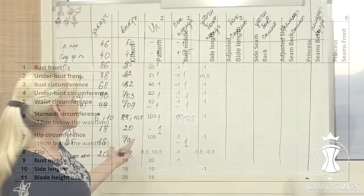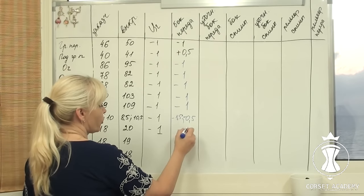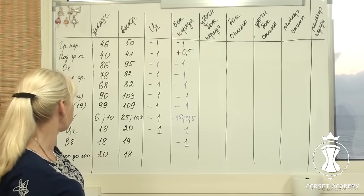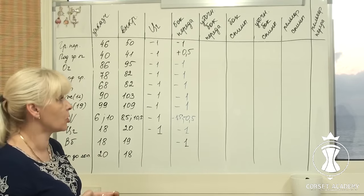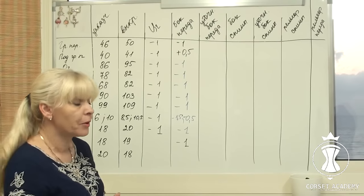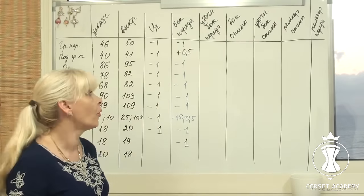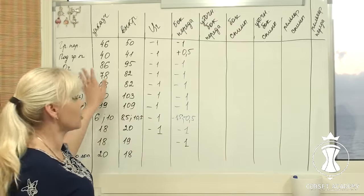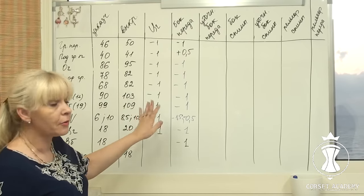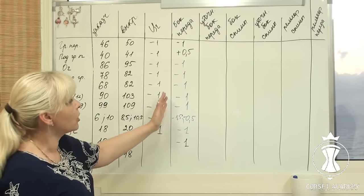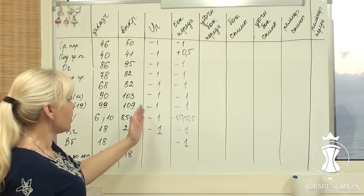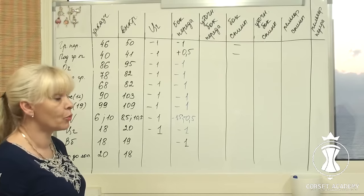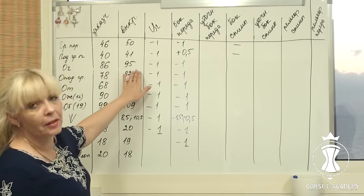Side length and blade height back measurements are not involved in these calculations. I move on to the configuration of the side seam line of the back half of the dress. First, I pre-calculate it and write all values in the side seam back column — column 6. I will see what happens if I take into account all measurements and calculations already recorded in the table. The bust front and underbust front measurements are not involved in these calculations. I write dashes in the table and move to the bust circumference.